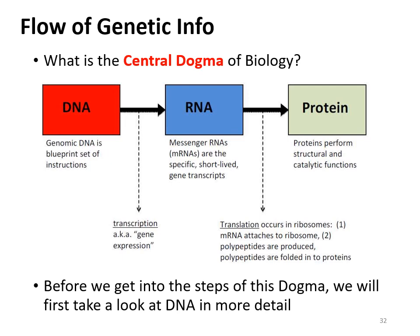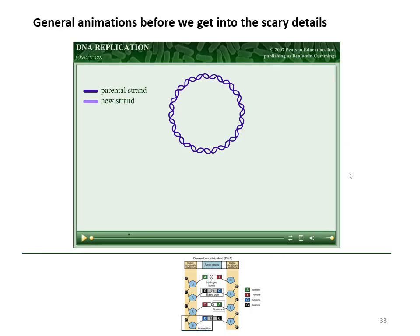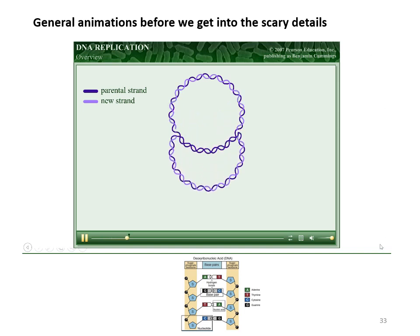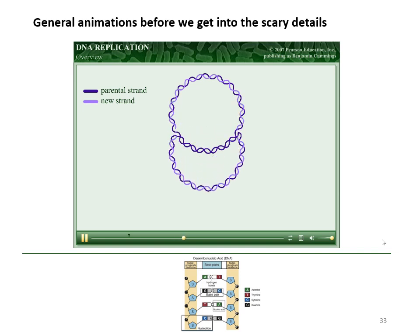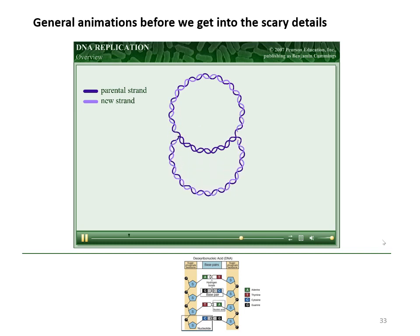Before we get into the steps of transcription and translation, we're first going to take a look at DNA in more detail, specifically DNA replication. In order to pass genetic information on to its offspring, an organism must make a copy of its DNA. The process of copying DNA is called DNA replication. During replication, each strand of the parental DNA serves as a template in the creation of new DNA. Because each newly synthesized DNA molecule is made up of one parental strand and one new strand, DNA replication is described as semi-conservative — one strand in each molecule is conserved.